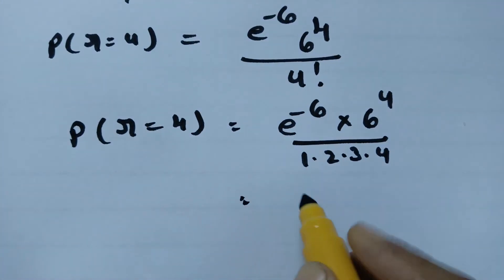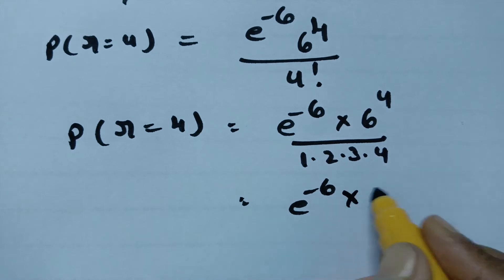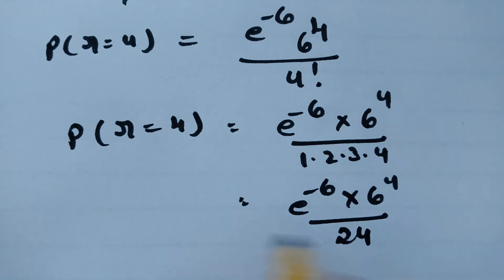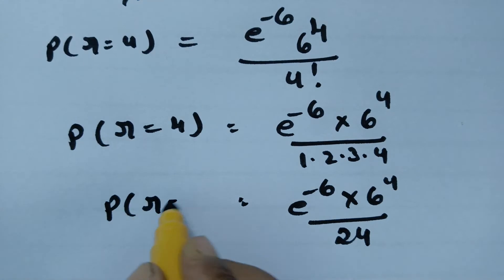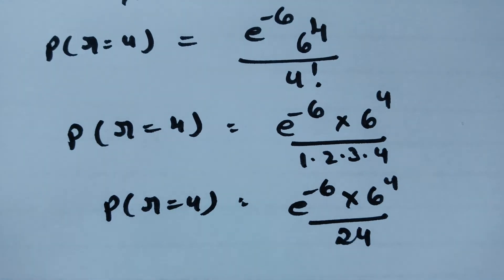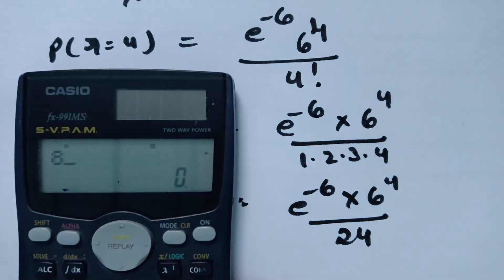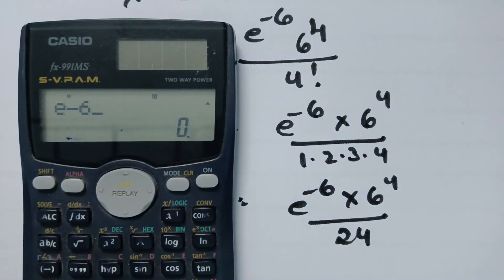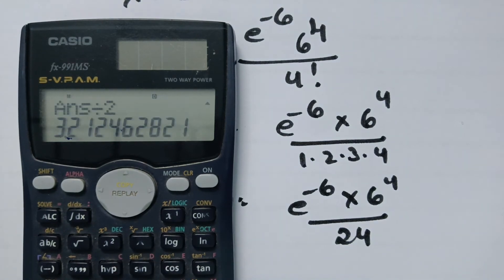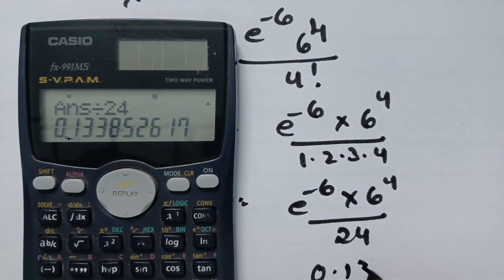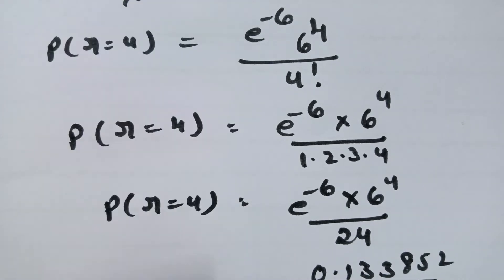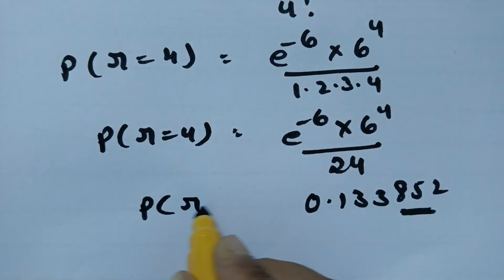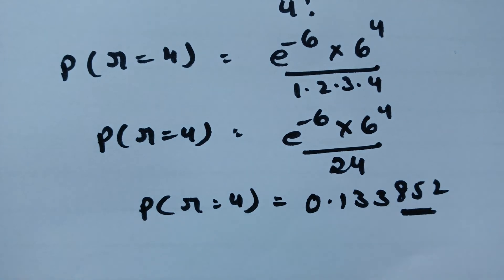So the probability of r equal to four is e^(−6) times 6^4 divided by 24. The computed value is 0.133852. This is the probability of receiving four bad checks on any given day.